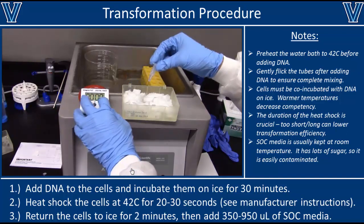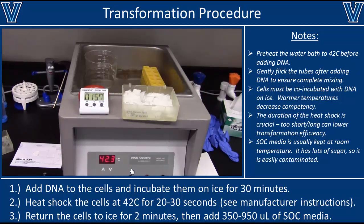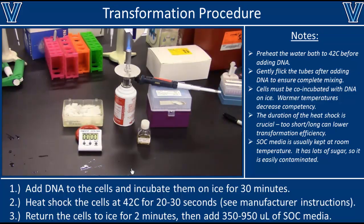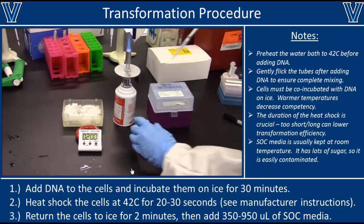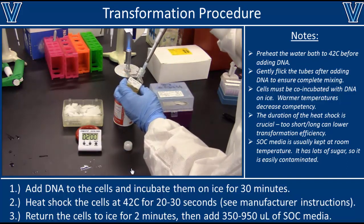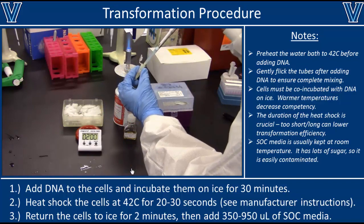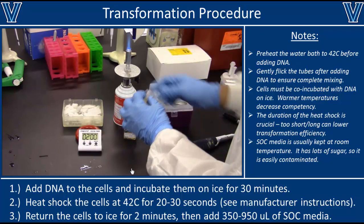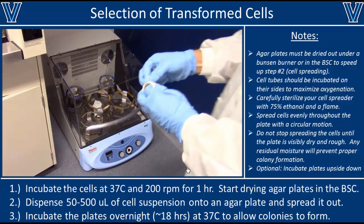Once your heat shock is done, place the cells back on ice for two minutes to help them recover. Then bring the cells back to the sterile bench and add 300 to 900 microliters of sterile SOC media to each cell aliquot. This SOC media is rich in nutrients and sugars which helps the cells recover; however it's also very easy to contaminate. SOC is usually kept at room temperature so you can see any contamination — always give it a quick shake to check if it's turbid. In a pinch, if your SOC media is contaminated, you can use LB media, but transformation efficiency may decrease.